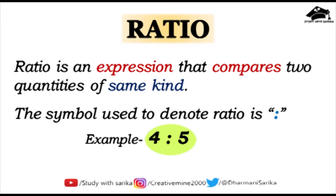Ratio is an expression that compares two quantities of the same kind. Ratio compares two quantities, but the condition is that the two quantities being compared should be of the same kind. For example, if one quantity is mass then the other is also mass; if one is length then the other is also length; if one is time then the other is also time.